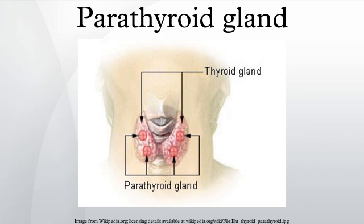History: The parathyroid glands were first discovered in the Indian rhinoceros by Richard Owen in 1852. In his description of the neck anatomy, Owen referred to the glands as a small compact yellow glandular body attached to the thyroid at the point where the veins emerged. The glands were first discovered in humans by Ivar Viktor Sandström, a Swedish medical student, in 1880 at Uppsala University.